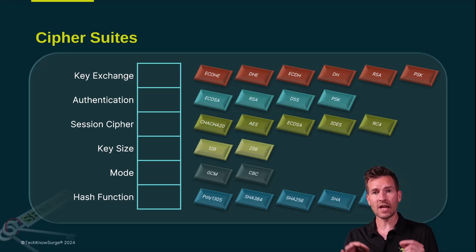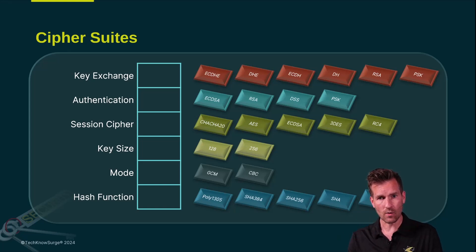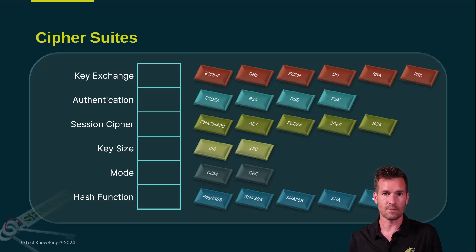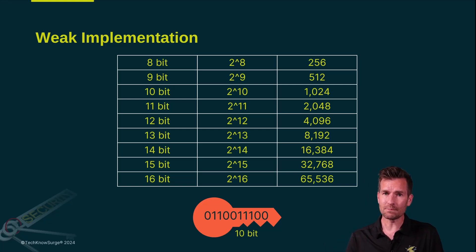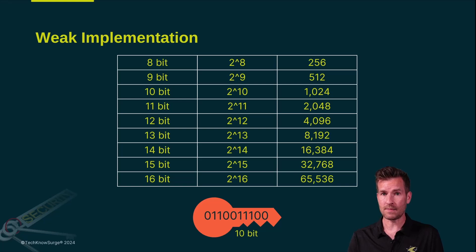Since things change over time you'll have to go back and revisit and reevaluate to make sure that you don't have any ciphers or cipher suites that have changed and should no longer be supported. Not only choosing the right cipher suites and the right ciphers is going to be important but how you implement it. There are many different ways to implement some of these ciphers and choosing the right way could make a big difference in how secure it is.